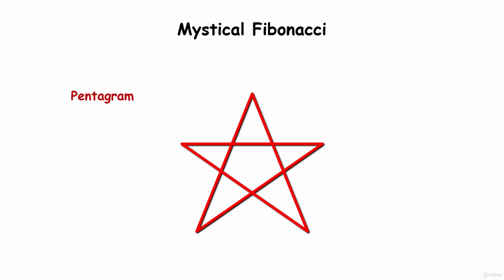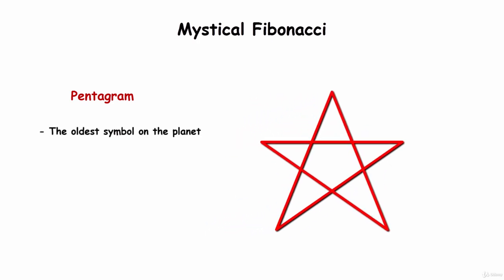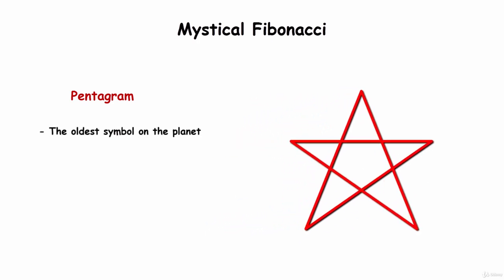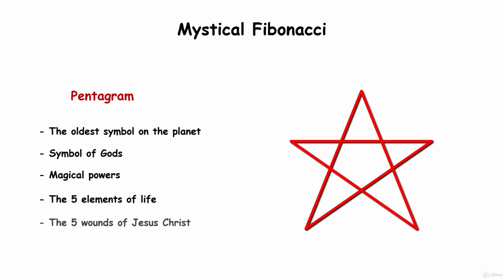The pentagram is thought to be the oldest symbol on the planet. In the Babylonian culture, it was the symbol of gods. The Japanese believed it had magical powers. In the Chinese culture, it symbolized the five elements of life. In Christian cultures, it was the symbol of five wounds of Jesus Christ.